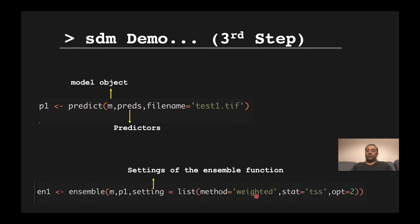When using weighted averaging, the performance metric is used as the weighting factor — for example, TSS is used here, but AUC or other metrics can be specified. When you use a threshold-dependent metric like TSS, you specify which optimization threshold criterion is used. The default is 2, which refers to the threshold that maximizes TSS. Full details are available in the help page.